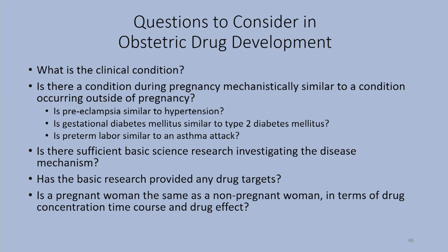Questions to consider in obstetric drug development include: what clinical condition requires treatment? Is there a condition mechanistically similar to one outside pregnancy — is preeclampsia similar to hypertension, gestational diabetes similar to type 2 diabetes, or preterm labor similar to an asthma attack since both are treated with beta agonists? If preterm labor is not an asthma attack, other drugs should be developed for this indication. Is there sufficient basic science on disease mechanisms? And is the pregnant woman pharmacokinetically equivalent to a non-pregnant woman? The evidence suggests she is not.